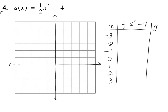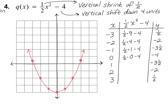Go ahead and pause the video and try number four on your own. The x-axis is moved up because everything shifts down four units. Your multiplier is one half, so you don't need to count by anything special. Here's what I have: the graph is much wider than the parent function x squared because the multiplier is one half. Anything between zero and one makes the graph wider — that's a vertical shrink of one half. It's also shifting down four units, so we write that as a vertical shift down four units.